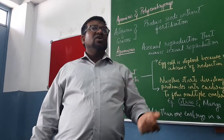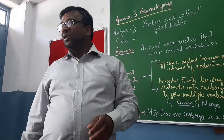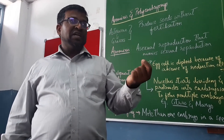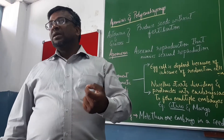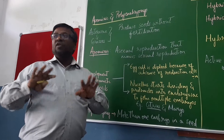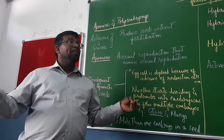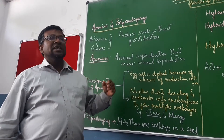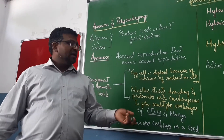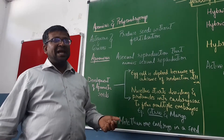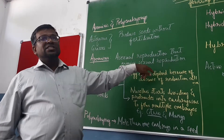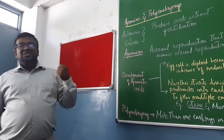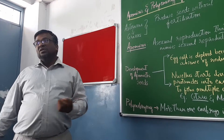Apomixis is asexual reproduction that mimics sexual reproduction. In sexual reproduction, the male gamete fuses with the female gamete to produce a zygote after fertilization, and the zygote develops into an embryo. In asexual reproduction, no zygote is formed and only one parent is involved. Apomixis — the formation of seeds without fertilization — is asexual reproduction mimicking sexual reproduction.